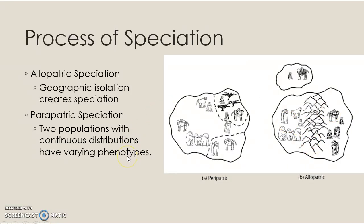Parapatric speciation involves a continuous distribution — all in one area. There are trees here and these monkeys prefer trees; there's a desert here and these monkeys prefer desert; there's grassland here and these monkeys prefer grassland. They have a totally continuous distribution, but phenotypically they have different features in all of these different areas, and those features are their reproductive isolating mechanisms. It's really an ecological reproductive isolating mechanism, because they're choosing these different regions and evolving based on them.